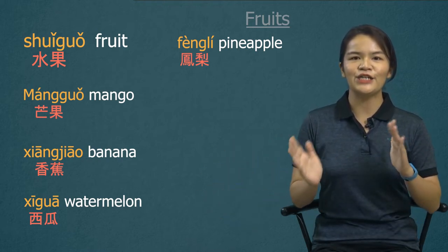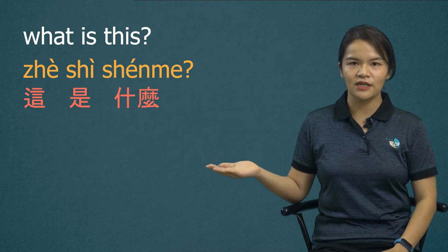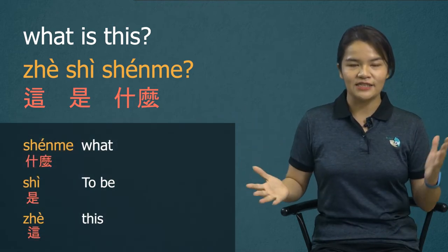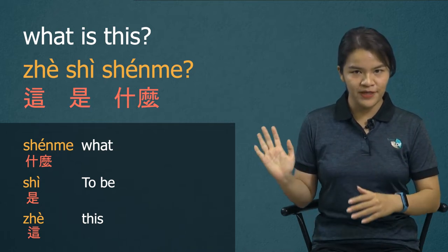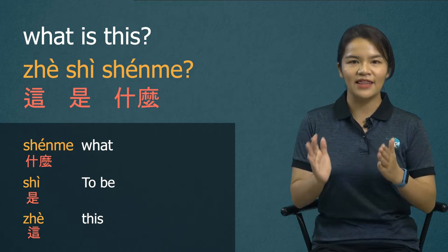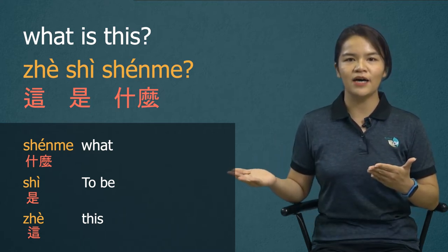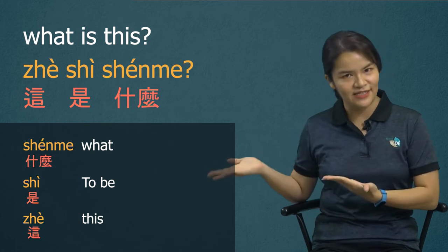OK, let's learn how to ask: What is this? 这是什么? 这是什么? 什么 means 'what.' 是 — we have learned it's the verb 'to be.' 这 means 'this.' So 这是什么 — this is what — means 'what is this?'